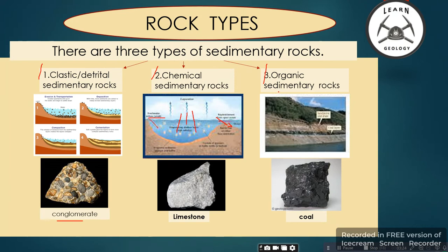The third type is organic sedimentary rock. When plants are preserved over time, they form coal. This process requires millions of years.